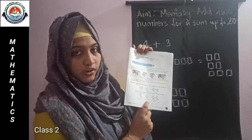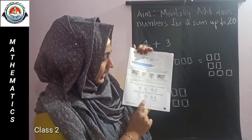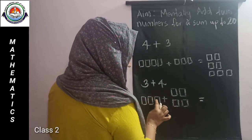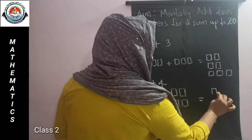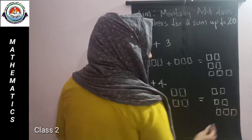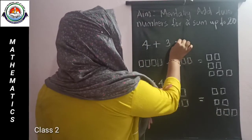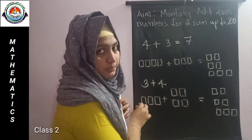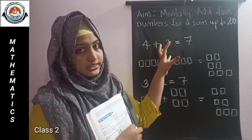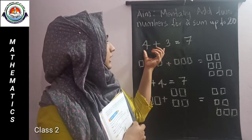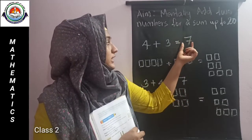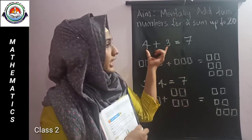3 marbles plus 4 marbles. We count: 1, 2, 3, 4, 5, 6, 7. So there are 7 marbles. We got the sum is 7 here also. So the addends are changed — addends are flipped — but the sum remains the same. No change in the sum even when the addends are changed.